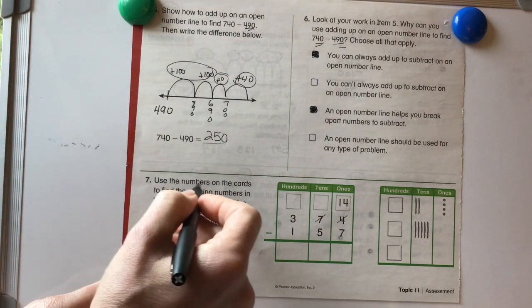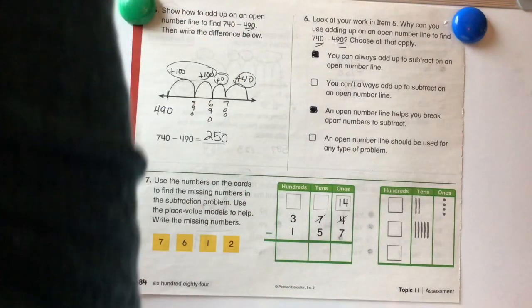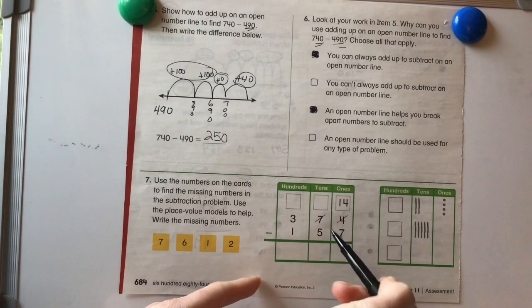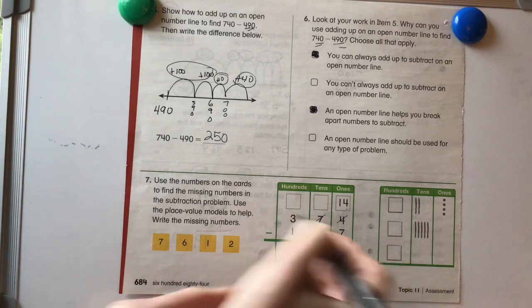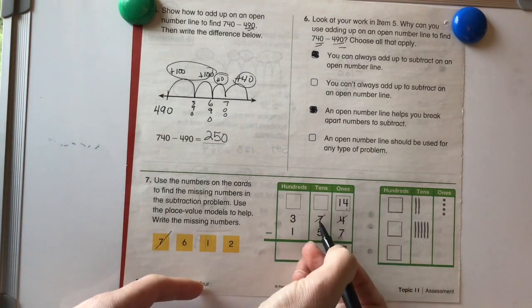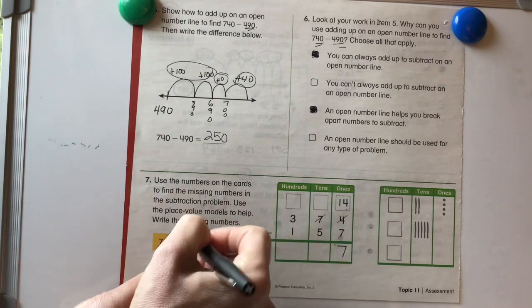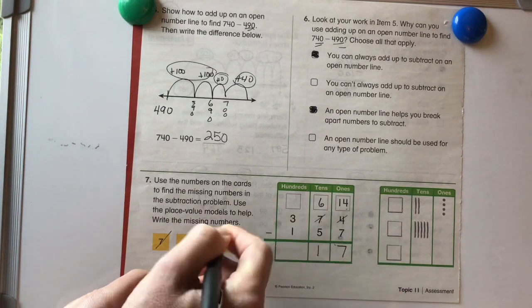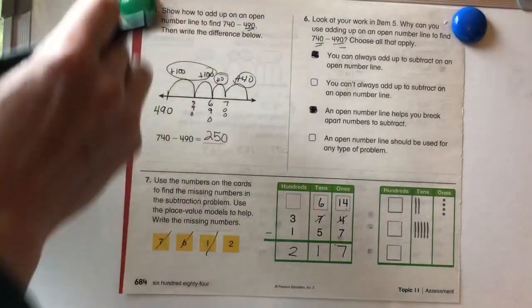Okay. Let's look at number 7. Use the numbers on the cards to find the missing numbers in the subtraction problem. Use the place value models to help you find the missing numbers. Okay. So we know that 14, we already know right off the bat, this is being regrouped. So 14 minus 7 we know is 7. This over here has not been regrouped yet. This 7 has been crossed out, but we know it's going to be 1 less. So we know that's going to be a 6. 6 minus 5 is 1. Now we have just 2 left. 3 minus 1 is 2. Great job.